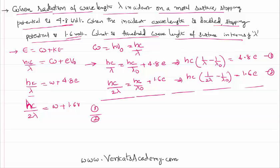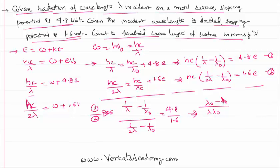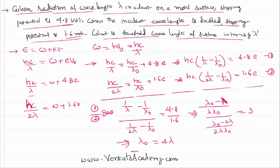Dividing the two equations, hc cancels out. We get (1/lambda - 1/lambda₀) divided by (1/(2*lambda) - 1/lambda₀) = 4.8/1.6. Simplifying using lambda*lambda₀ as the LCM: (lambda₀ - lambda)/(lambda₀ - 2*lambda) = 3. Solving this equation gives lambda₀ = 4*lambda.